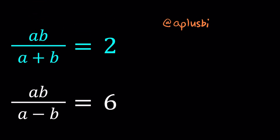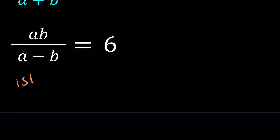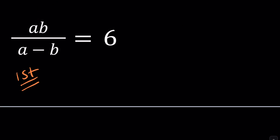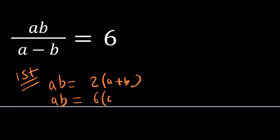So if you do cross multiplication — I'm going to call this the first method — and just cross multiply: ab becomes two times a plus b, and from the second equation, ab becomes six times a minus b. Here, you can either divide these equations or set the ab's equal to each other. This will be 2a plus 2b equals 6a minus 6b.